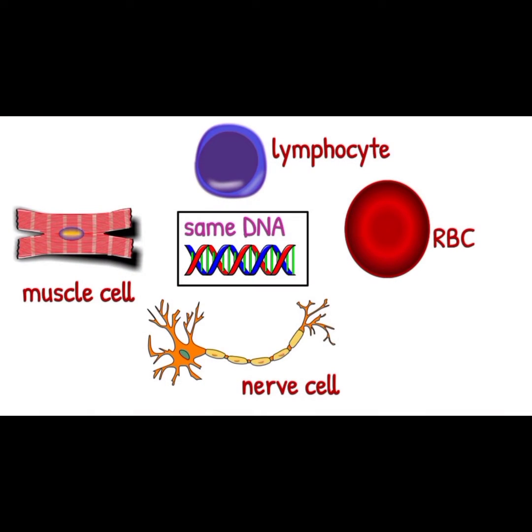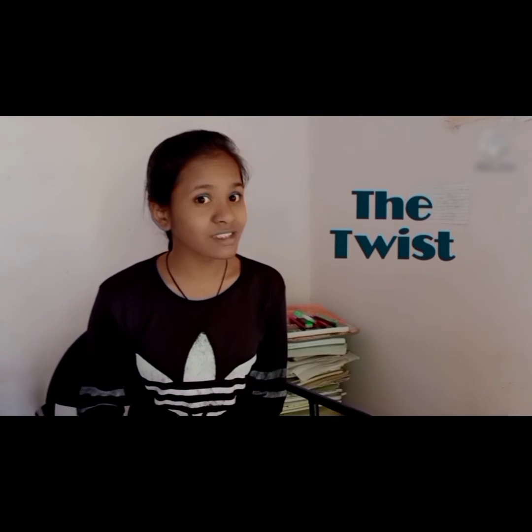These epigenetic marks are influenced by our environment, our habits, and our behavior, and they are constantly accumulating. Your body has the same DNA in different cells — the reason is epigenetics.